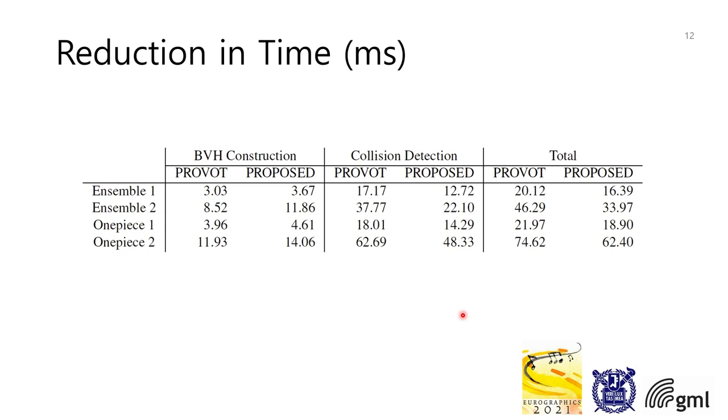The last statistic is reduction in time. We observed that with the proposed method, the construction of BVH takes slightly more time because it takes more computation when merging. But the remaining part of collision detection, including BVH traversal, takes significantly less time. So in total, the reduction of the proposed method with respect to the previous method in time is on average 18%.